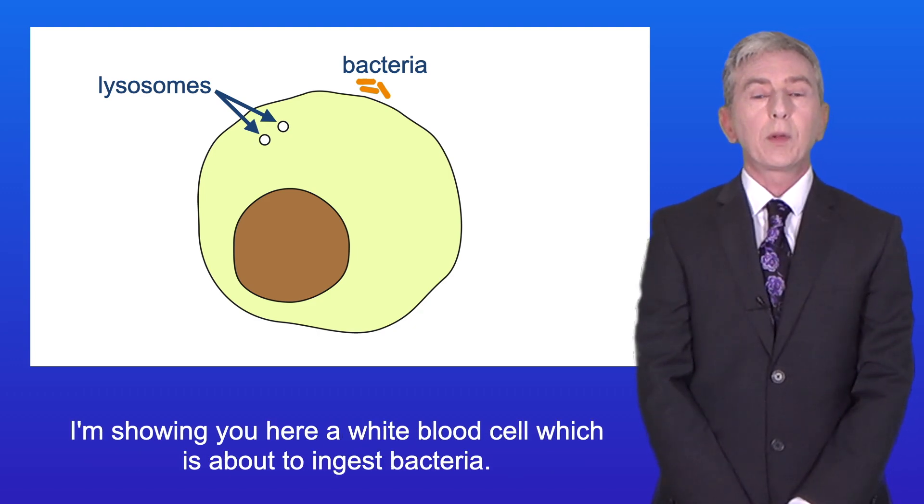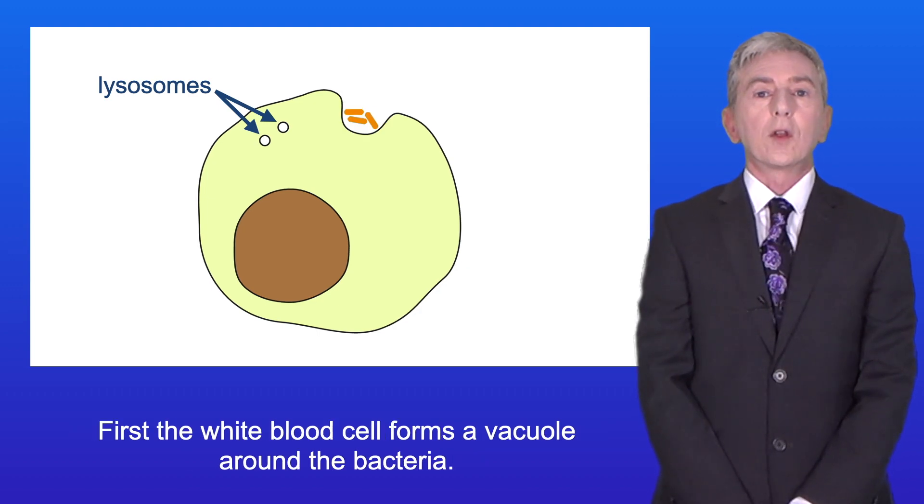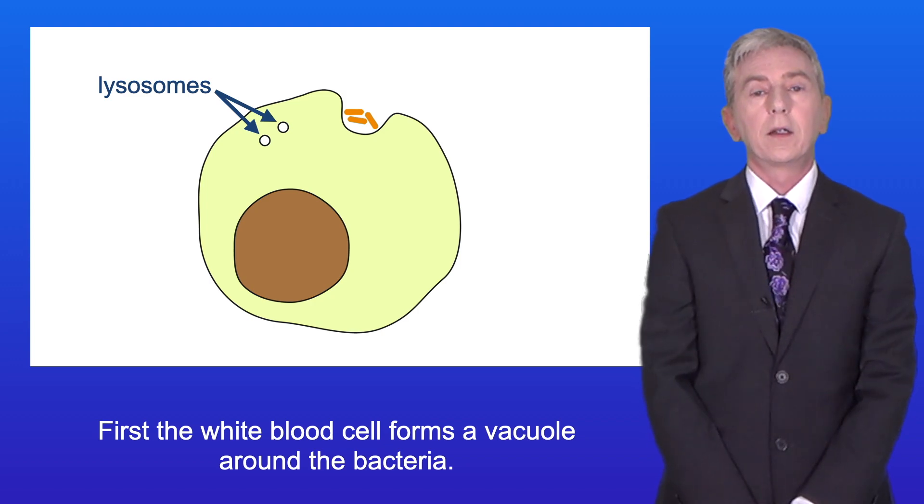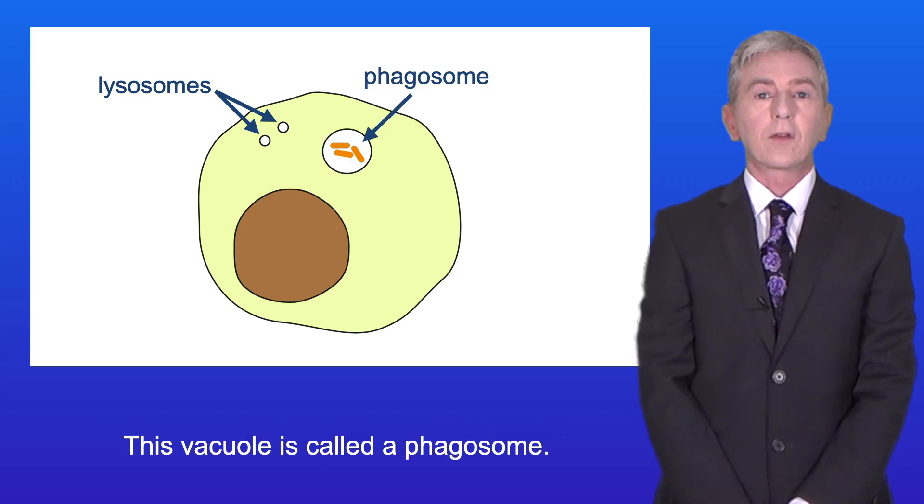I'm showing you here a white blood cell which is about to ingest bacteria. First, the white blood cell forms a vacuole around the bacteria. This vacuole is called a phagosome.